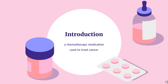What is doxorubicin? Doxorubicin, sold under the brand name Adriamycin among others, is a chemotherapy medication used to treat cancer. This includes breast cancer, bladder cancer, Kaposi's sarcoma, lymphoma, and acute lymphocytic leukemia. It is often used together with other chemotherapy agents. Doxorubicin was approved for medical use in the United States in 1974, and is on the World Health Organization's list of essential medicines. Doxorubicin was originally made from the bacterium Streptomyces pusetius.